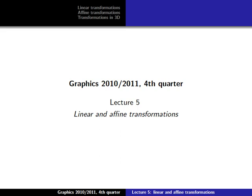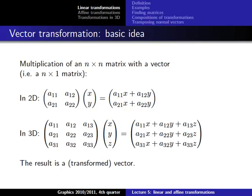Today we are going to talk about linear and affine transformations. Last time we introduced matrix multiplication, and I said that a vector can be seen as a special kind of matrix — namely a matrix with n rows and one column. If we multiply a matrix with such a vector, we get another matrix, which because of how we defined vector multiplication, is again a vector.